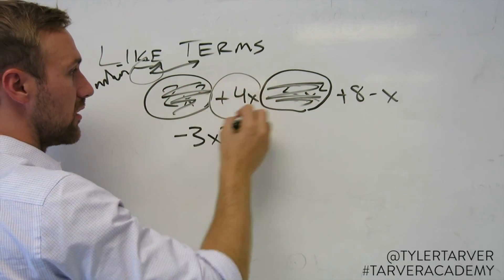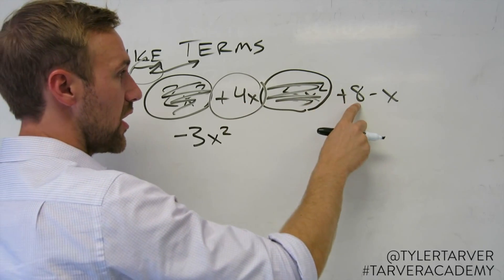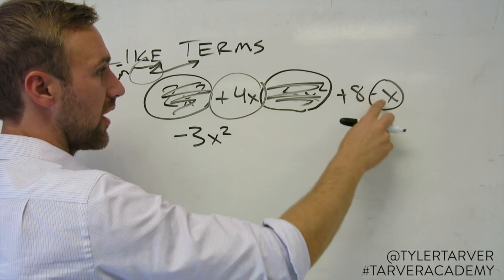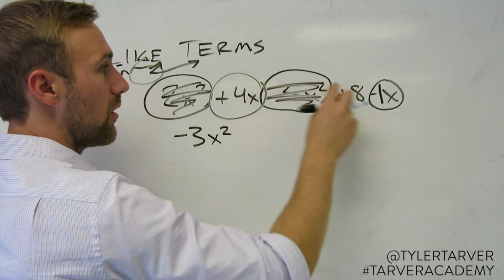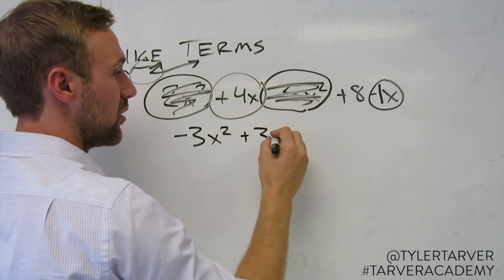Next, go to the next one. Positive 4x. I include the sign in front of it. So positive 4x minus, what I know is always there, 1. 4 minus 1 is 3, and the x is still with it.